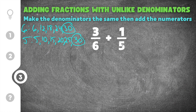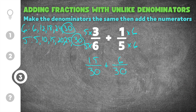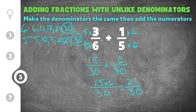We need to change the 6 into a 30 and the 5 into a 30. Multiply three sixths by 5: 3 times 5 is 15 and 6 times 5 is 30, giving 15 over 30. Multiply one fifth by 6: 1 times 6 is 6 and 5 times 6 is 30, giving 6 over 30. Now we add the numerators: 15 plus 6 is 21, keeping the denominator as 30. Our solution is 21 over 30.